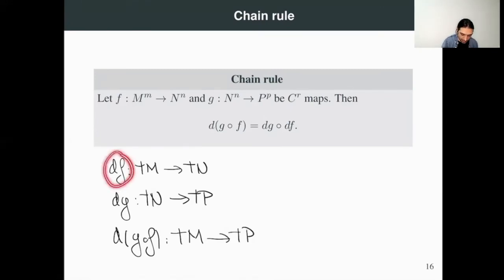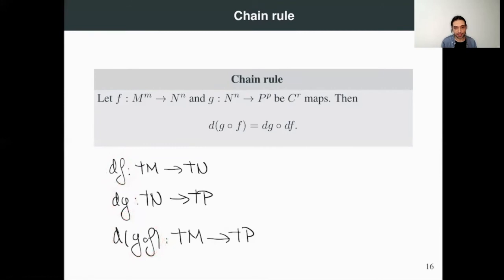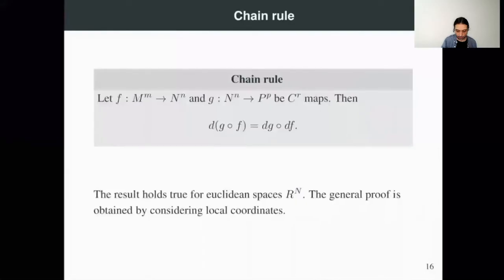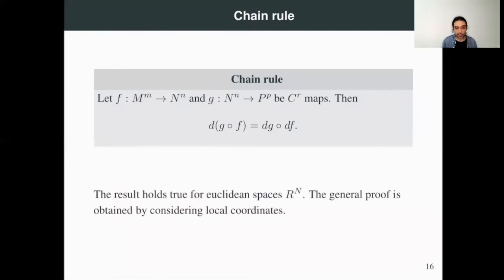By composing dF and dG and comparing with the differential of F composed with G, at least the source and target spaces coincide, and the equality of these maps is just the chain rule. The result holds true for Euclidean spaces and the general proof is obtained just by considering local coordinates. That is the program we follow in many cases: transfer properties to the Euclidean case, realize they correspond to something we already know, and bring them back. Almost the unique difficulty in this transfer is making sure what you do is independent of the choice of local charts.